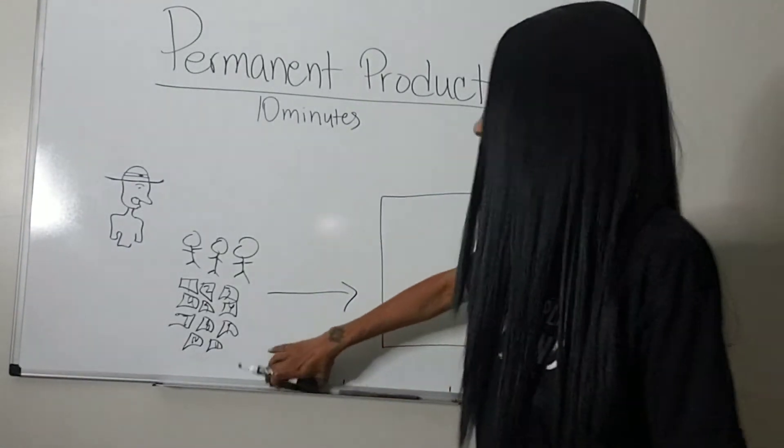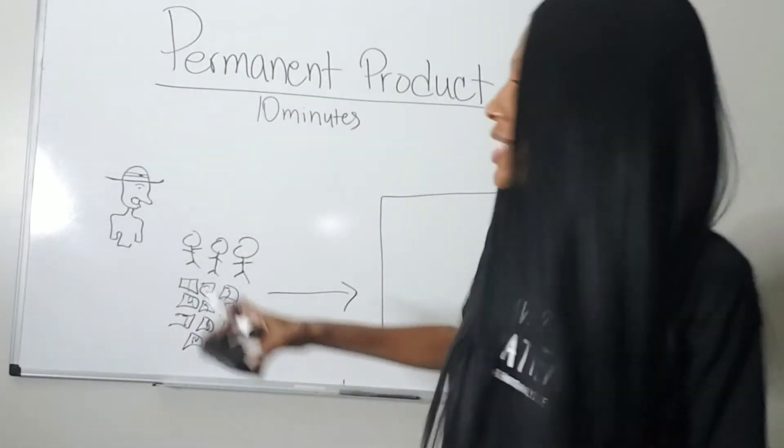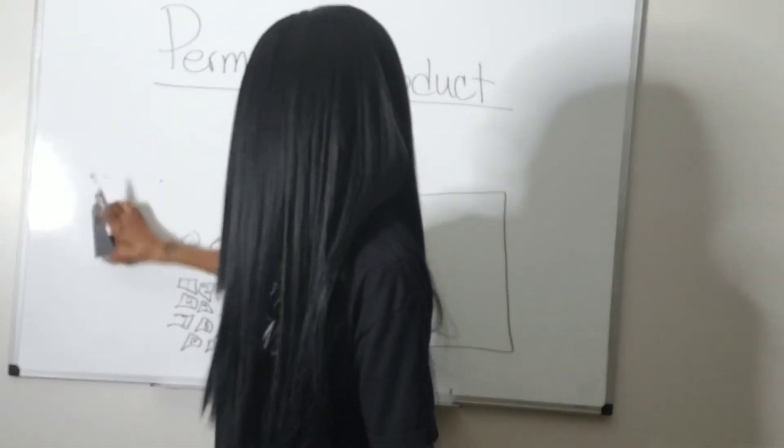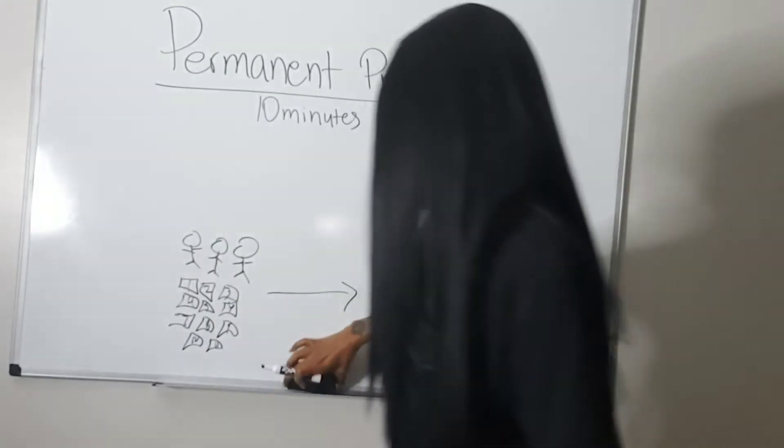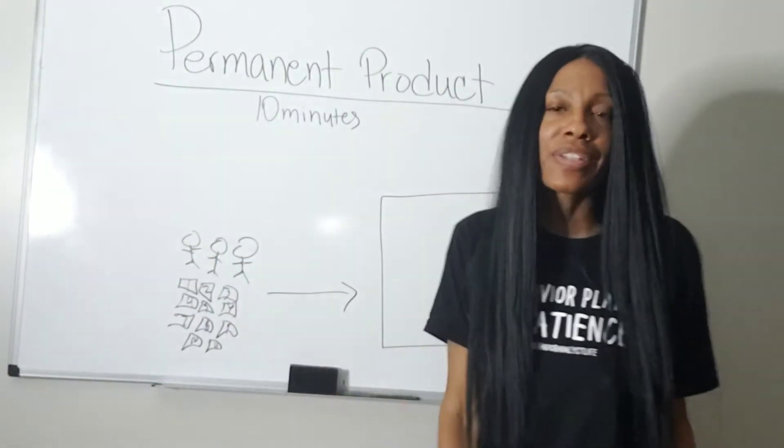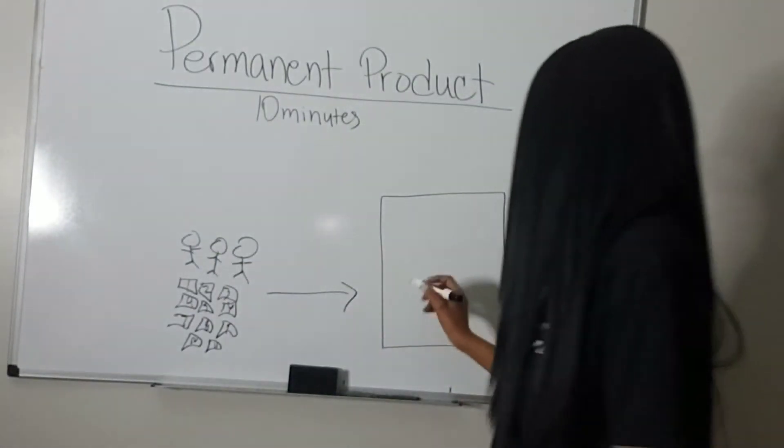So the drill sergeant is like, get it done, get it done, get on it, move it. And then he leaves to go check on the rest of the squadron, check on his other troops. So while he's gone, they're moving them.